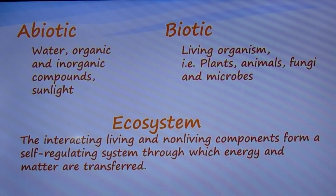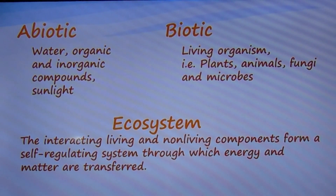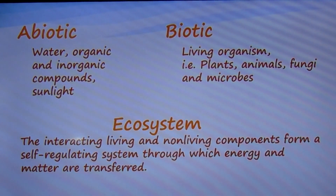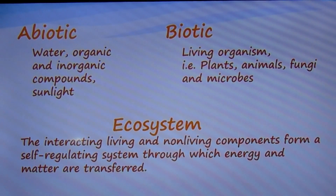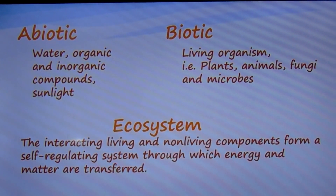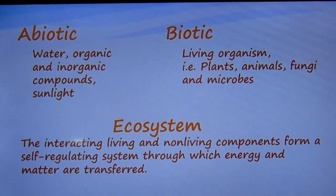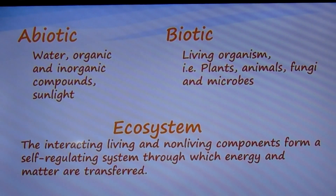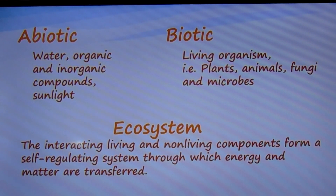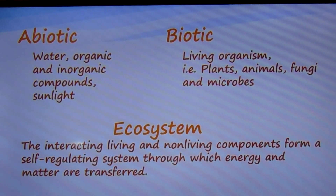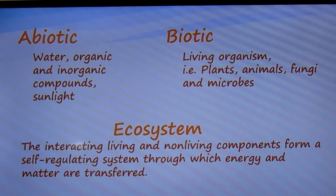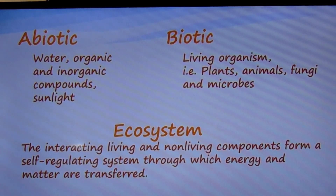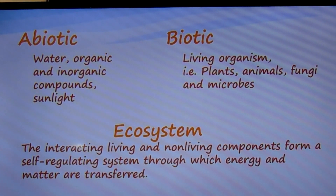An ecological system, or ecosystem, is made up of all the organisms that live in an area and the physical environment of that area. The physical environment includes water, inorganic substances, and sunlight — the non-living things. Organisms, their products, and the effects they have on their environment are the living components of an ecosystem. Together, the interacting living and non-living components form a self-regulating system through which energy and matter are transferred.